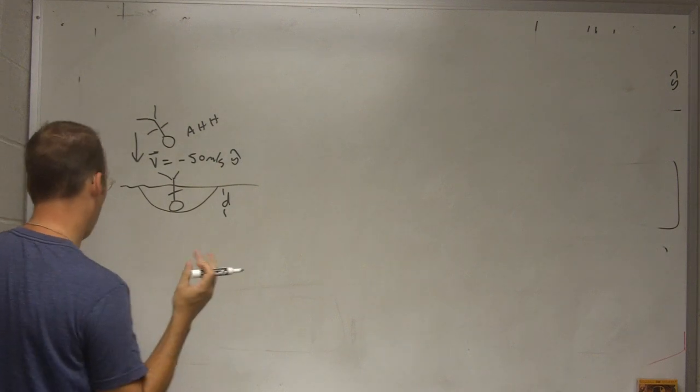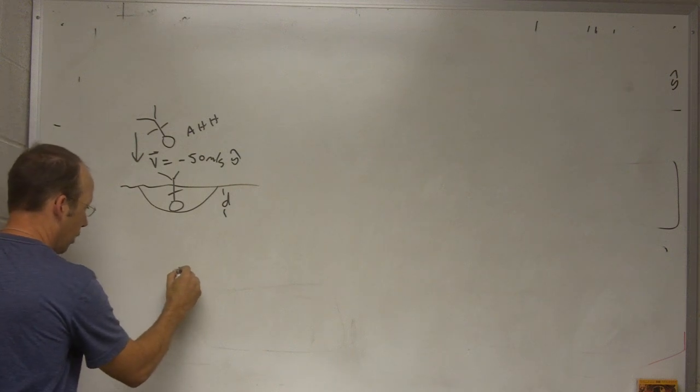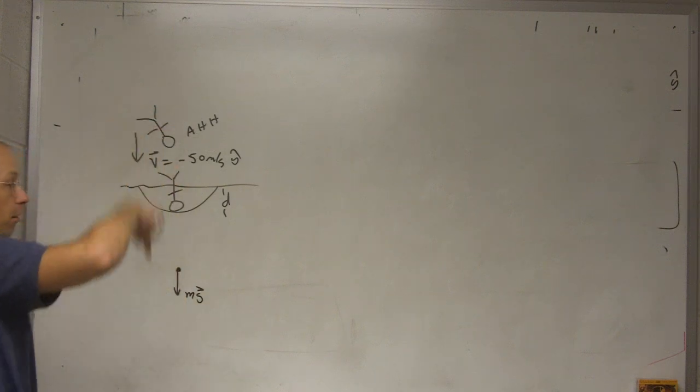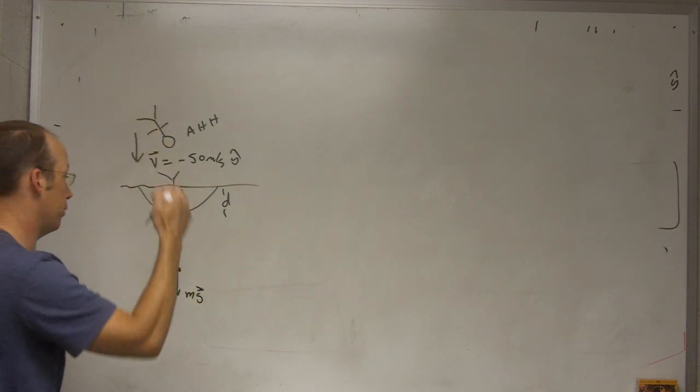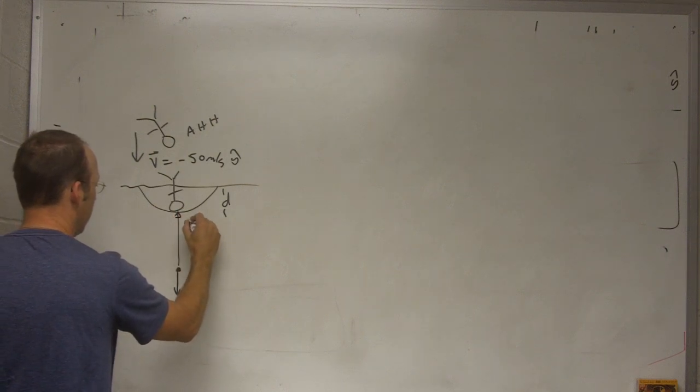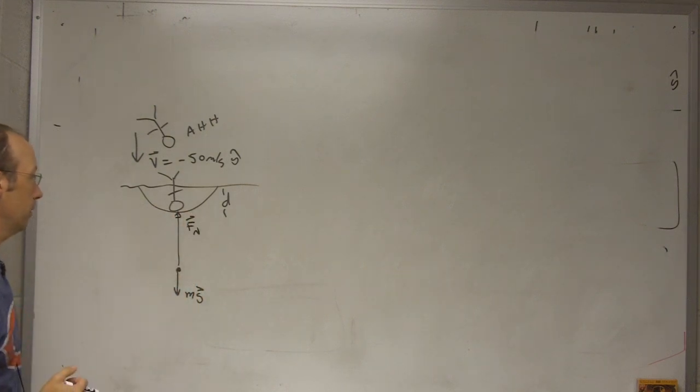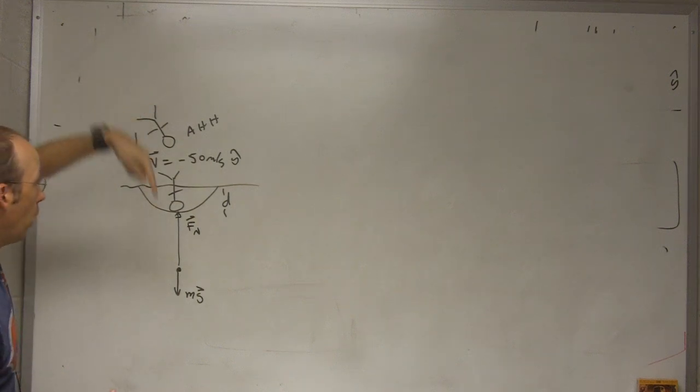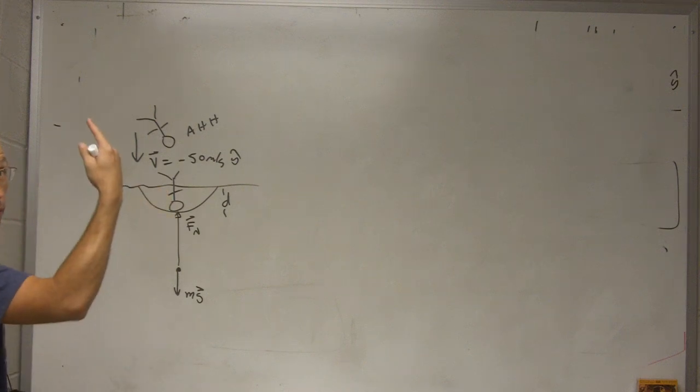So if I want I could draw a free body diagram for him. I have gravity. But since he is moving down I am going to need a very large force pushing up. I will call this Fn. It is from the ground. But then we will have a net force going up because his momentum was down and then his momentum was zero. So the net force has to be this way.